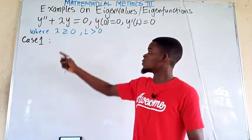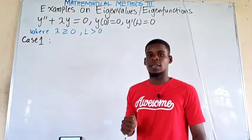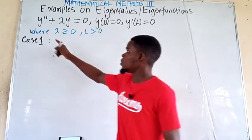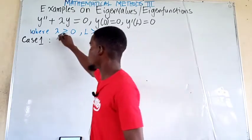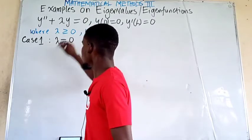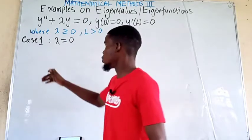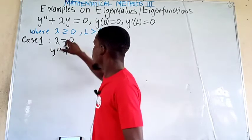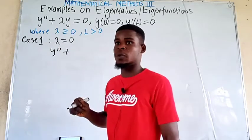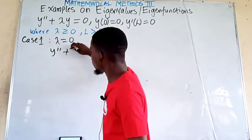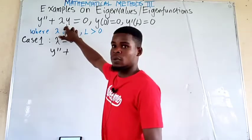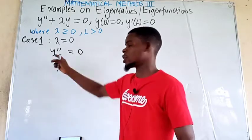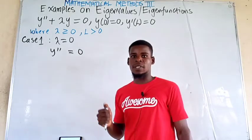Looking at the equation y double prime plus lambda y equals 0, when lambda equals 0, this equation is reduced to y double prime plus 0, which we equate to 0.